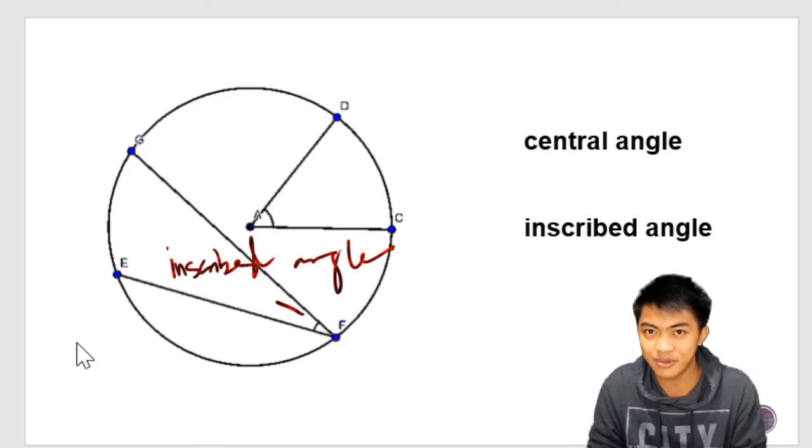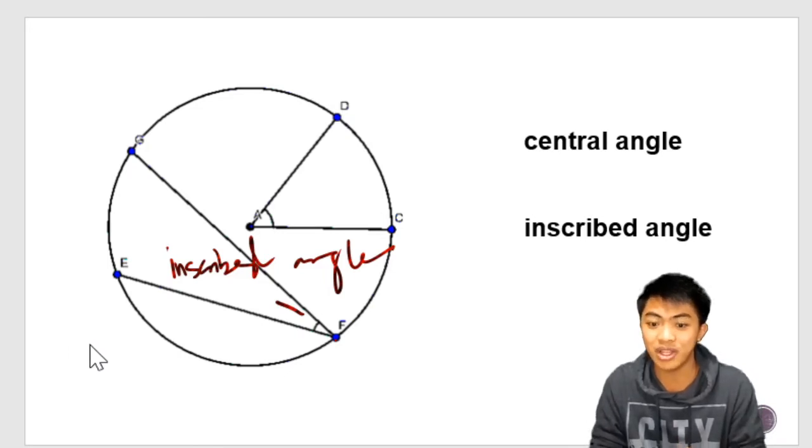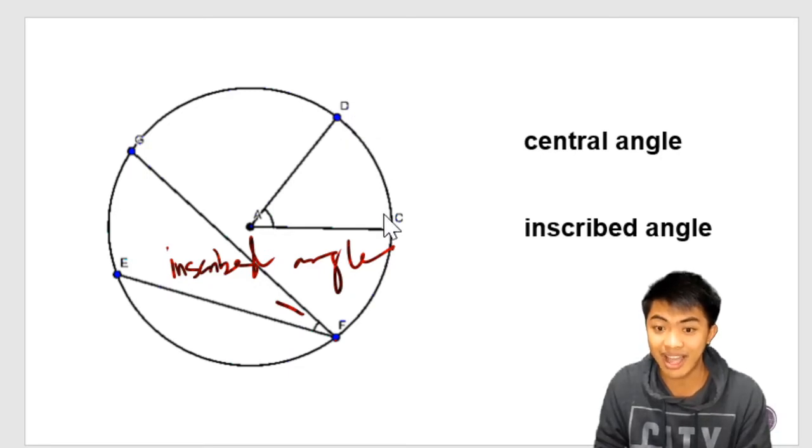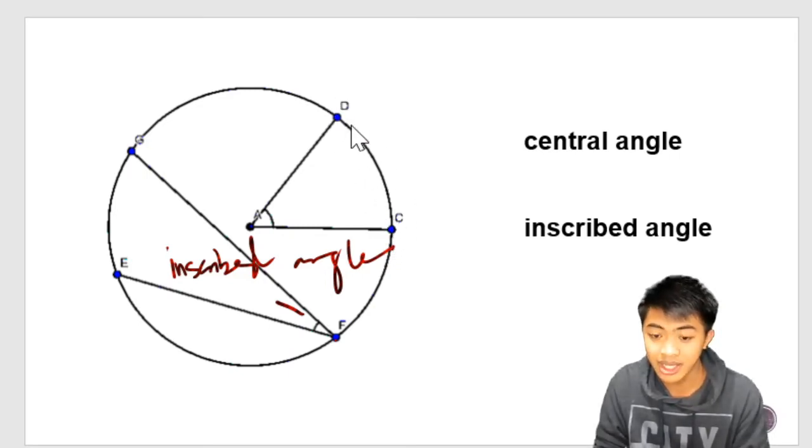On the next slide, we are going to see the relationship of these angles and their intercepted arcs. But what are intercepted arcs? Well, intercepted arcs, yun yung katapat na arc ng angle. So in this case, angle A, yung kanyang intercepted arc ay DC. Arc DC. Okay. This intercepted arc shares the same endpoint with the angle.